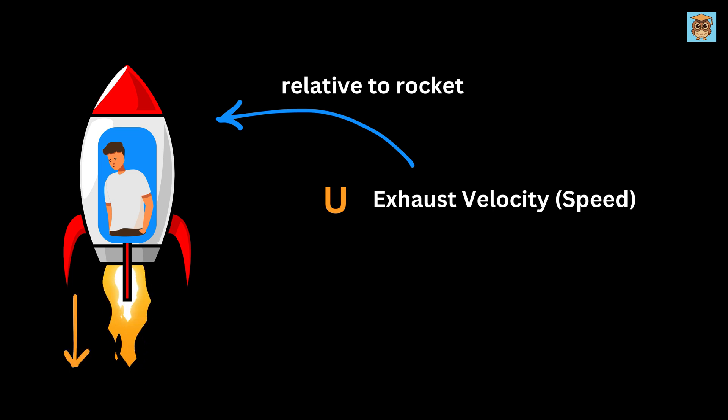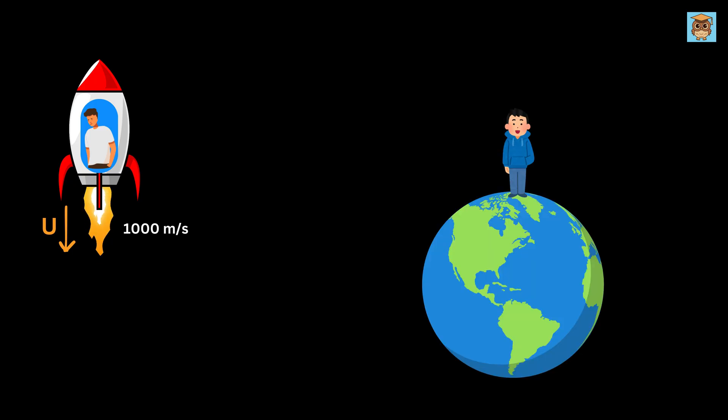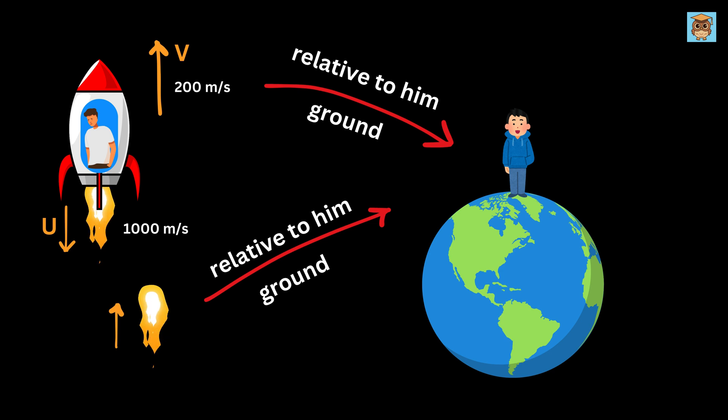What does that mean? Imagine you're sitting on the rocket as it flies up. From where you're sitting, you look down and see the gases shooting out the back at u speed, say 1,000 meters per second downwards compared to you and the rocket. But how fast are those gases moving compared to someone standing on earth? Say the rocket is moving upward at a speed of v meters per second, say 200 meters per second, with respect to the observer standing on earth. So the speed of the ejected fuel relative to the ground should be v minus u, which will be 200 minus 1000 or minus 800 meters per second. The negative sign here means it is simply moving downward at 800 meters per second with respect to the observer standing on earth.